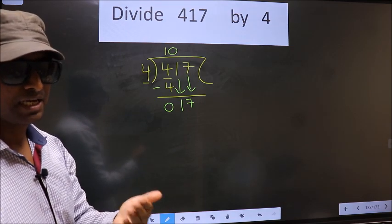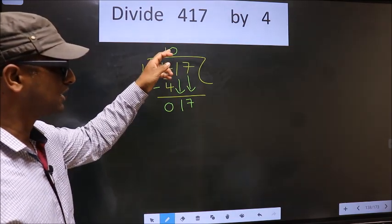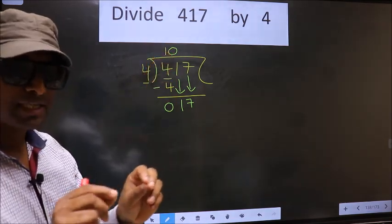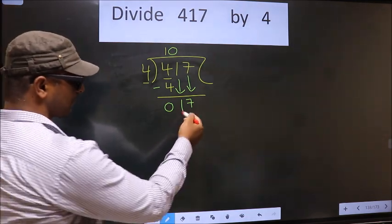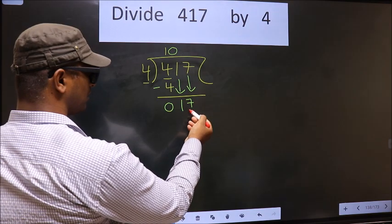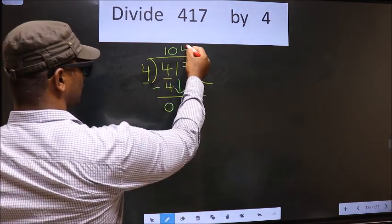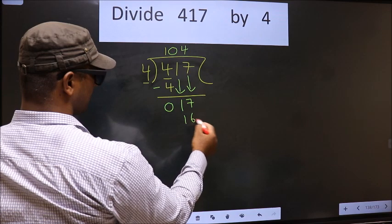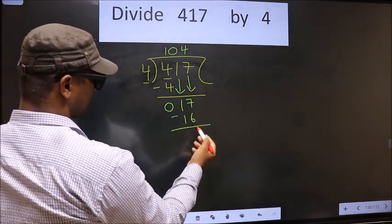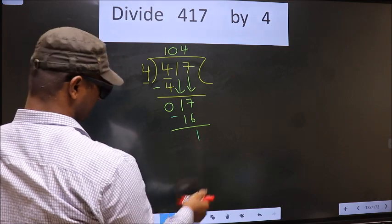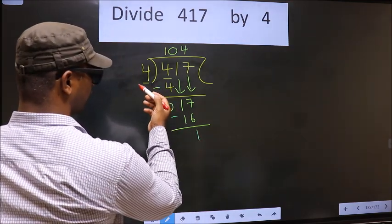Next, here we have 17. A number close to 17 in the 4 table is 4 fours, which is 16. Now you subtract: 17 minus 16 is 1.